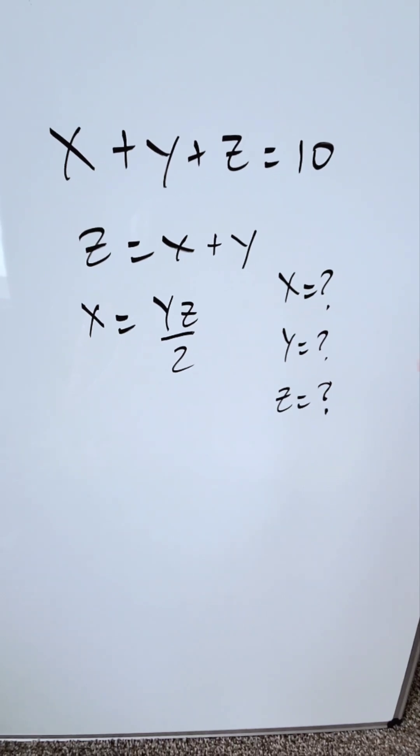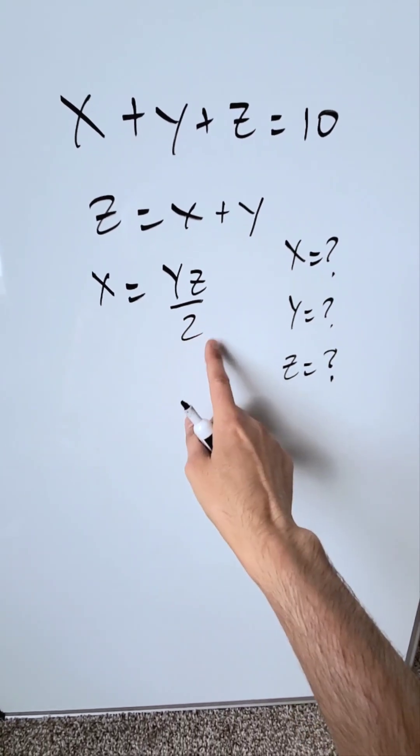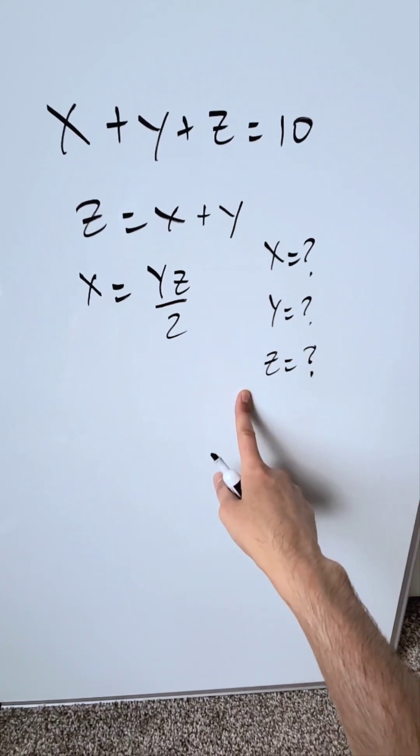My equations are x plus y plus z equals 10. Then I have z is equal to x plus y, then I have x is equal to yz over 2. What are the values of x, y, and z?